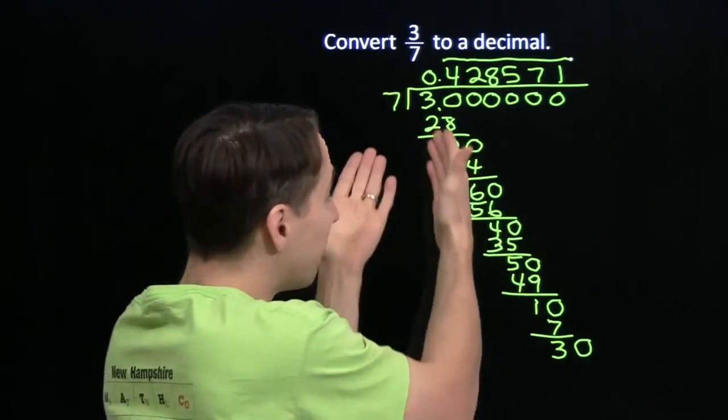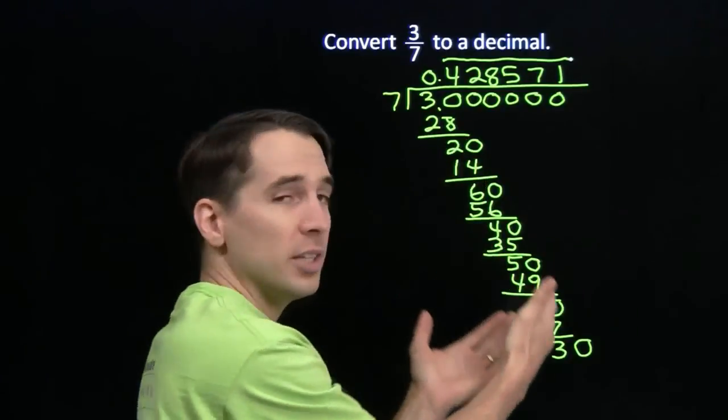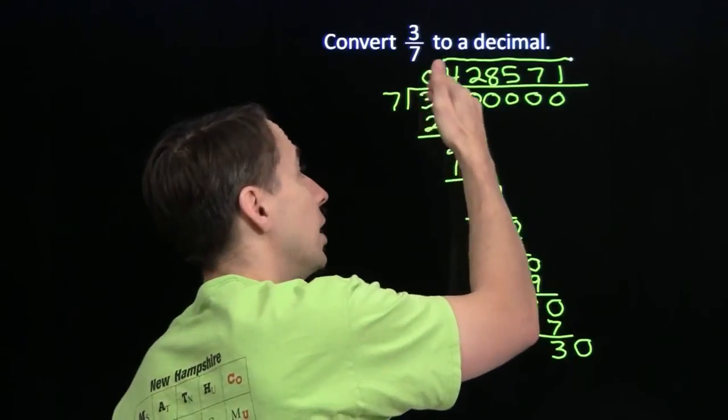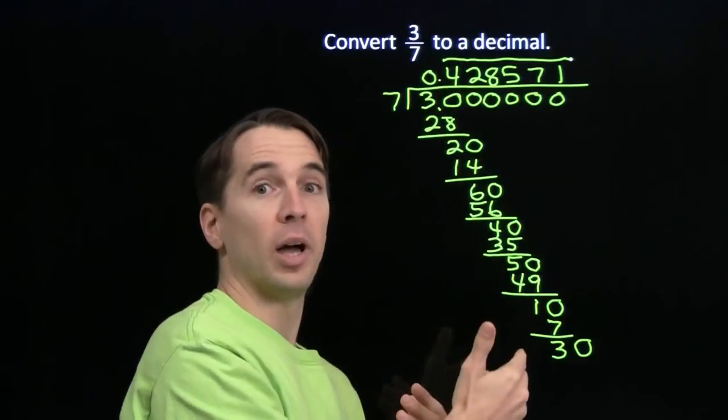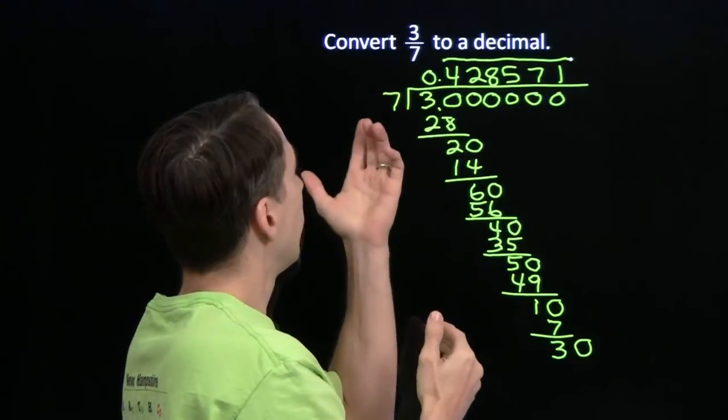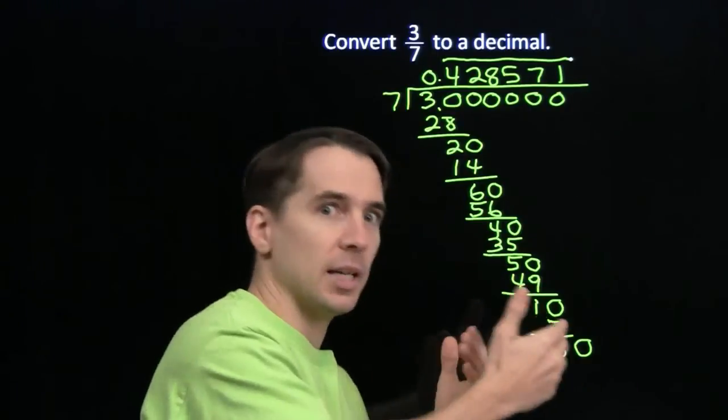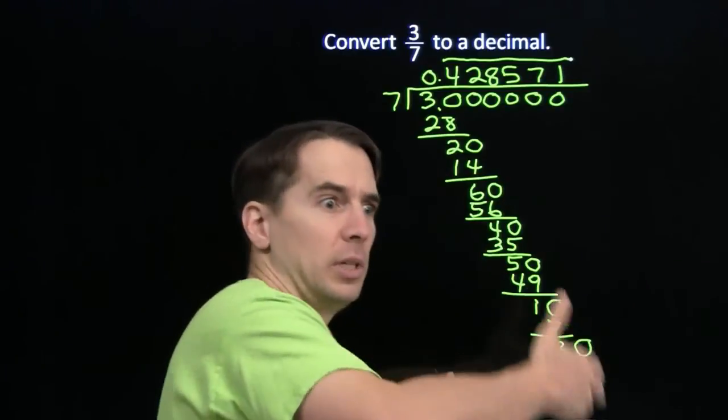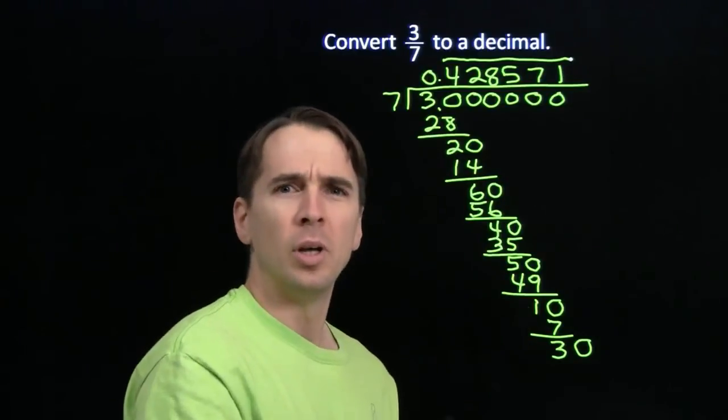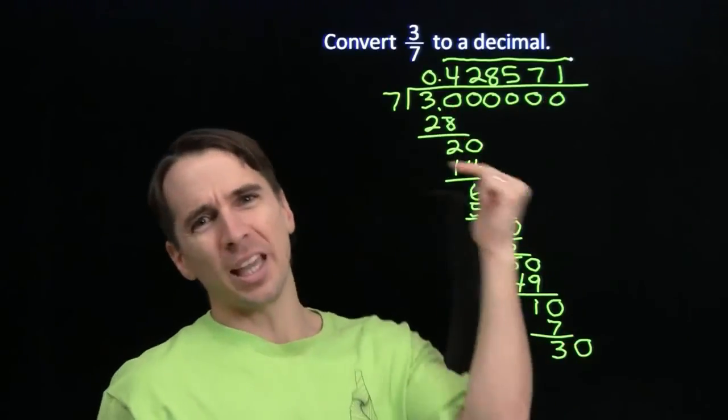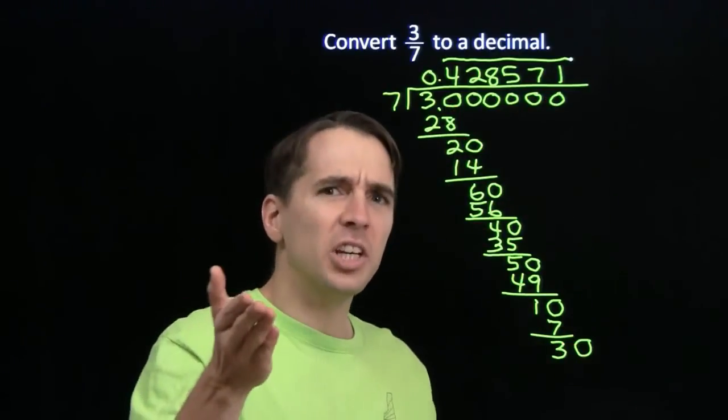But if it doesn't hit a 0, it's eventually going to repeat because there are only so many things that can be left over. So you're eventually going to start repeating that division and you'll end up with a repeating decimal if you don't have a terminating one. So now we know how to turn a terminating decimal into a fraction, and how to turn a fraction into either a terminating or repeating decimal. But can we always take a repeating decimal and turn that back into a fraction? Let's check that out next.